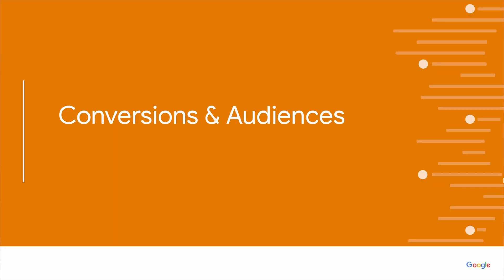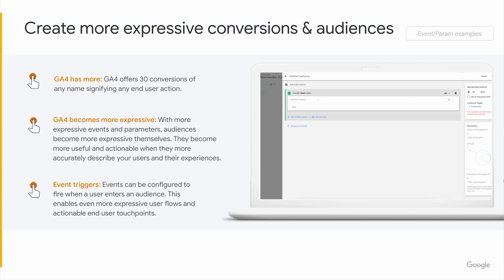Conversions and audiences really derive from those events and parameters. The first thing to note is that Google Analytics 4 simply has more — you're able to classify more events as conversions because of this extensible and flexible event model. GA4 also becomes more expressive with respect to audiences. If you can imagine sending only three pieces of custom information, the rigidity of what that created for audience classification was real. Now that you can send any number of events along with 25 parameters of any name, you can be very descriptive and expressive with your events and build audiences based on that expressiveness.